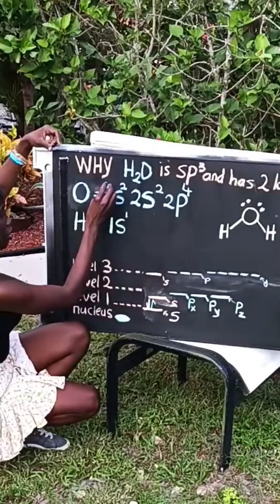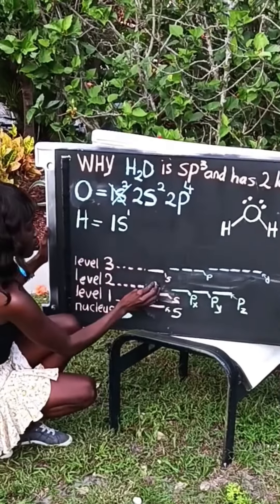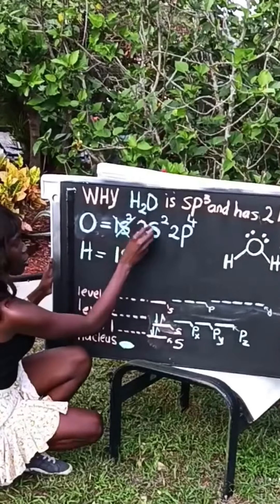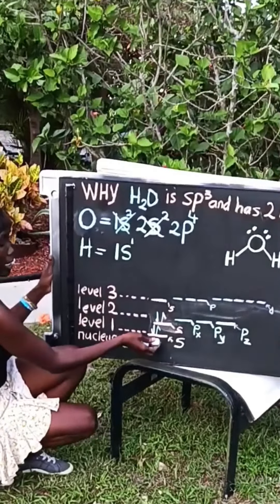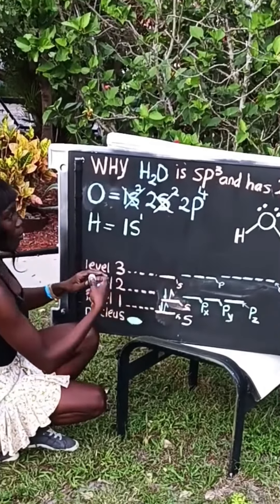So let's start filling in now. Your 1s2 down here, 2s2. We have one electron, another, we can just go ahead out. And your 1s fills before your 2s, your 2s fills before your 2p.